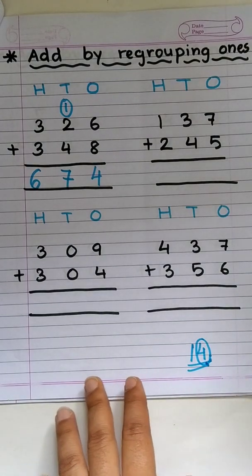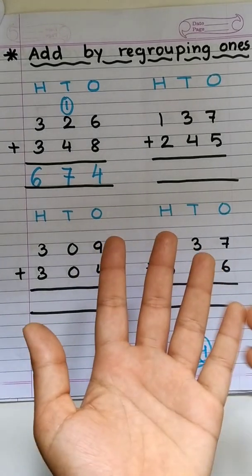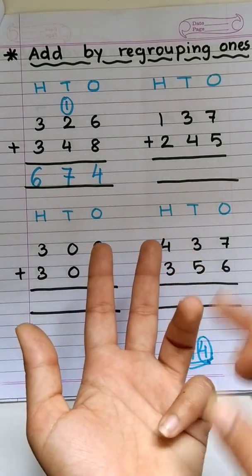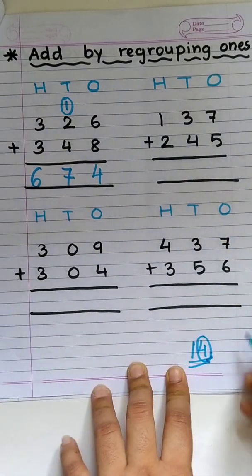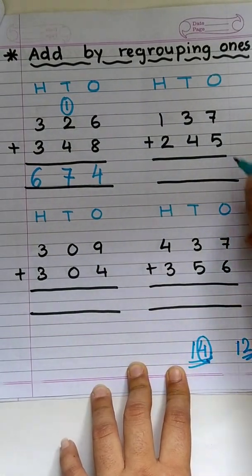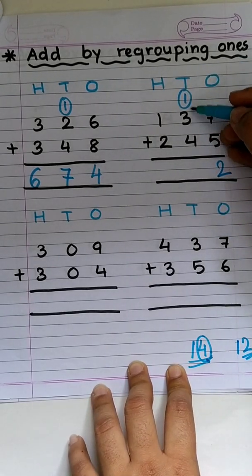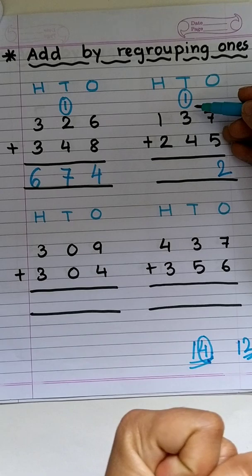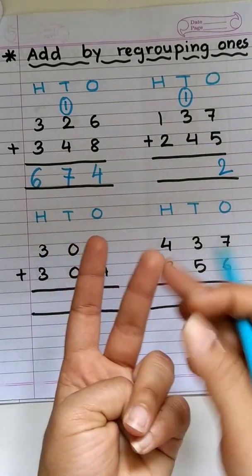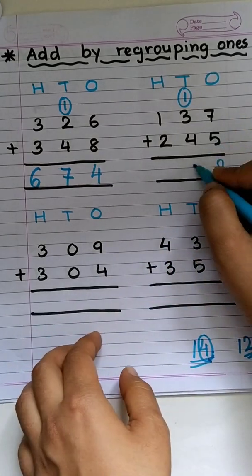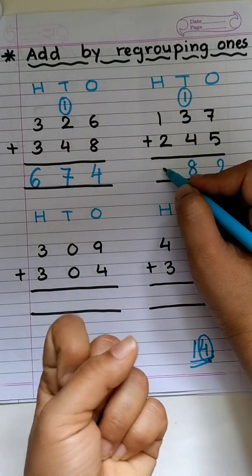Let's try one more. 7 plus 5. 7 in mind, 5 on fingers. After 7: 8, 9, 10, 11, 12. So, our answer over here is 12. We'll write 2 over here. And 1 goes up. Easy. Now, 3 plus 1 is 4. Now, 4 plus 4. After 4: 5, 6, 7, 8. And 2 plus 1 is 3. Easy.